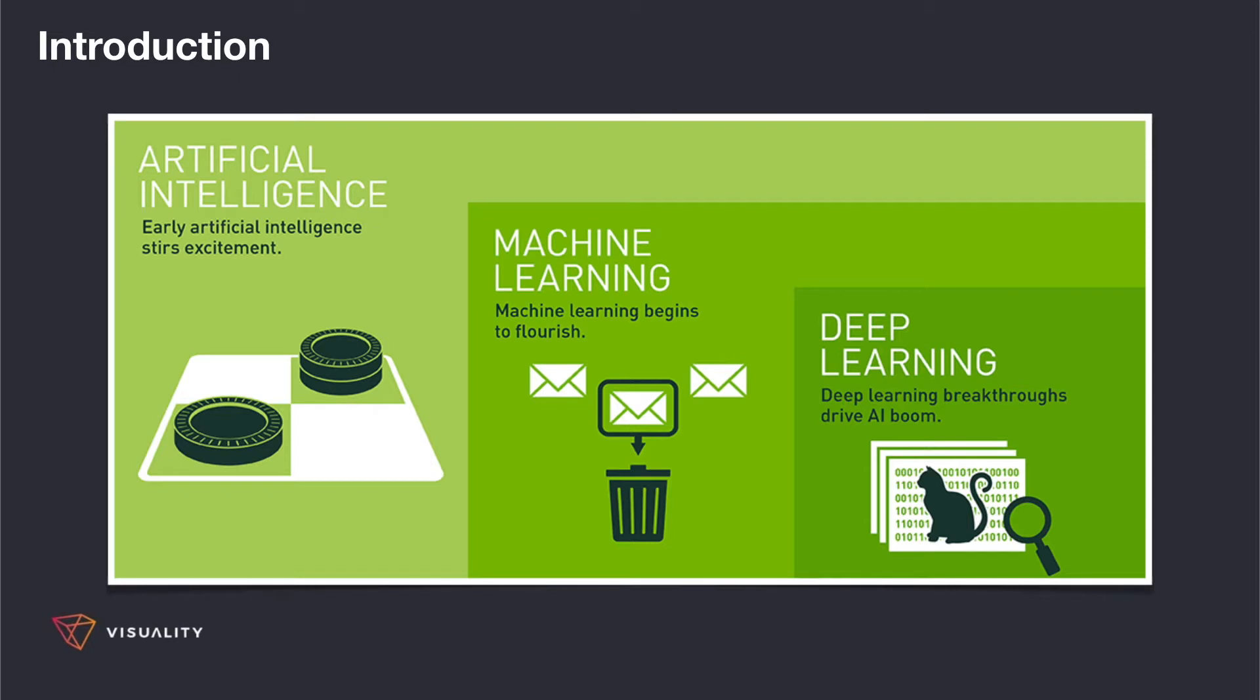To clearly understand what machine learning really is, it is important to know what it is not. Since the terms artificial intelligence, machine learning, and deep learning are often used interchangeably, I will cover their differences in this talk. Basically, deep learning is a subset of machine learning, which in turn is a subset of artificial intelligence.